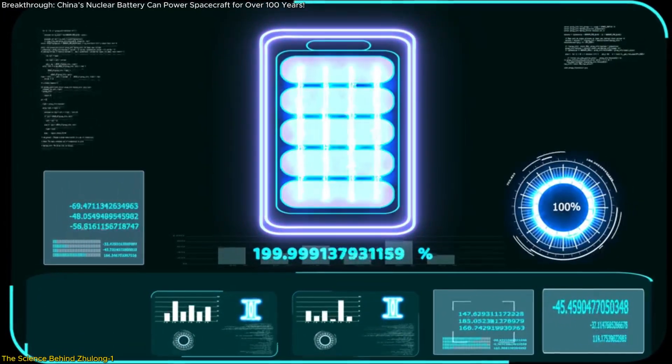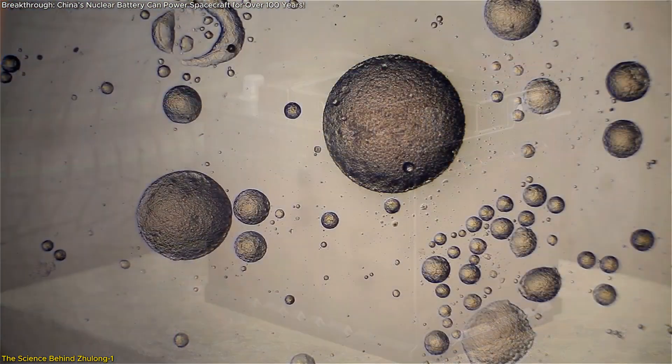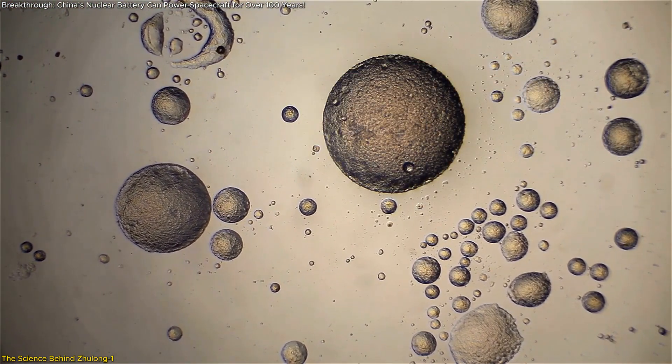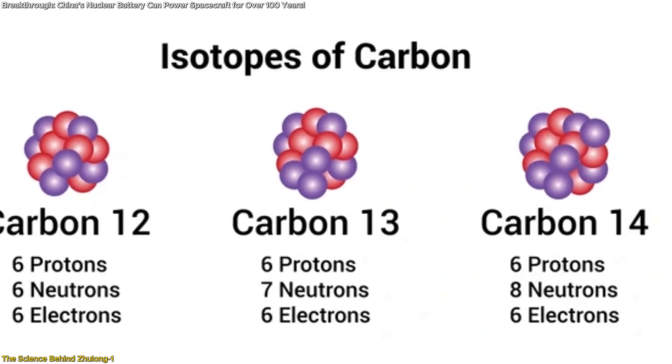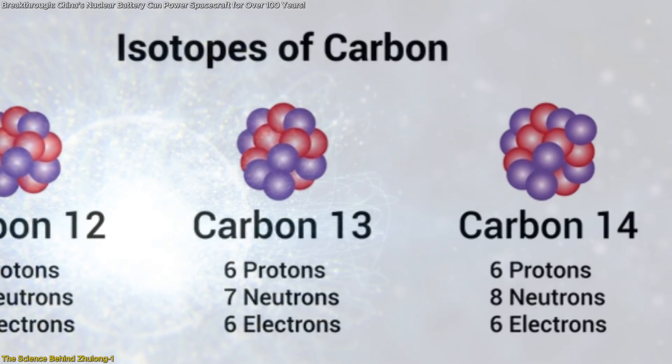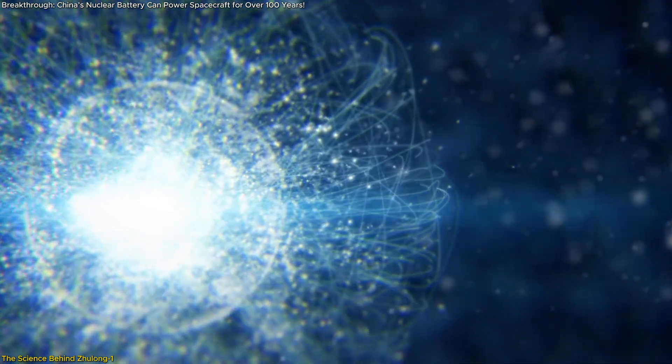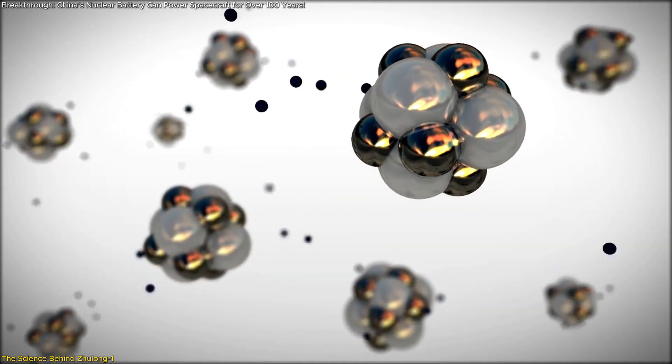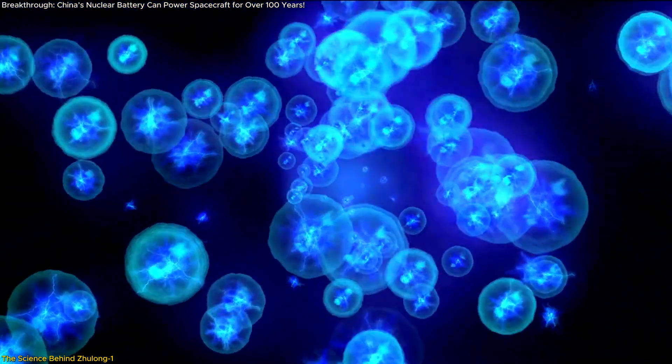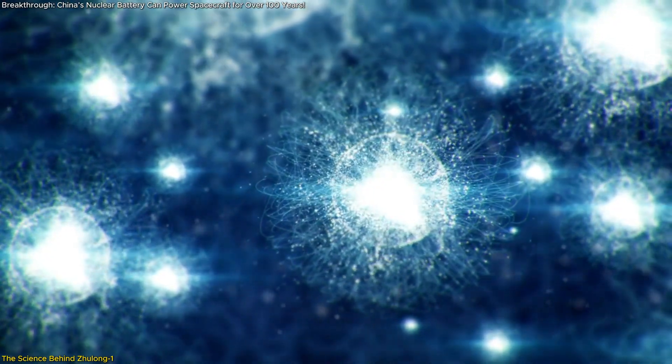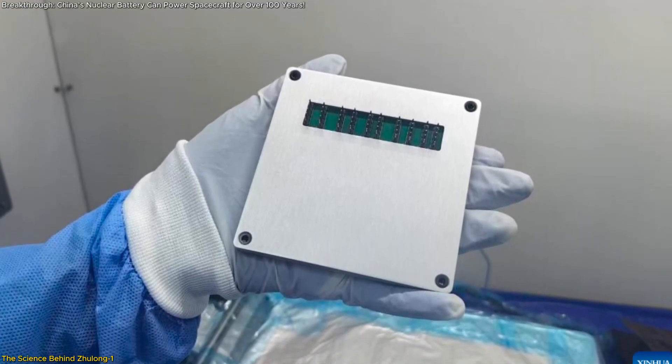The Zhulong-1 nuclear battery operates on a fundamentally different principle compared to conventional chemical batteries. Instead of relying on chemical reactions that degrade over time, it generates power through radioactive decay. At the core of this innovation is carbon-14, a radioactive isotope with a half-life of 5,730 years. As it decays, it emits beta particles which interact with a silicon-carbide semiconductor, converting this decay energy into electricity. This process provides a continuous and maintenance-free energy source, positioning Zhulong-1 as a potential game-changer in energy storage technology.